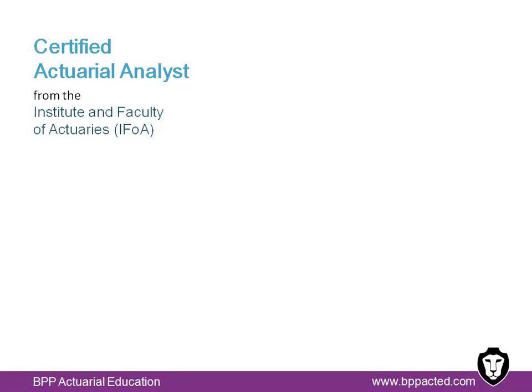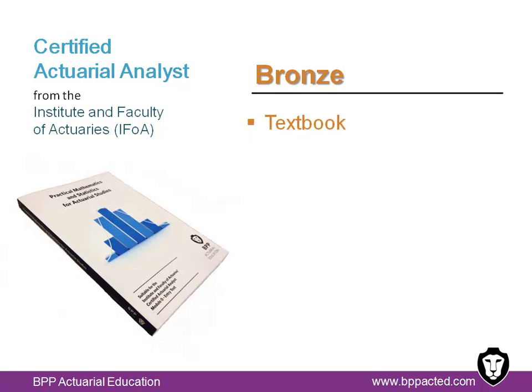We've arranged these into three tiers: bronze, silver and gold. The bronze package offers a choice of an e-book or a hardcopy textbook, containing notes, worked examples with solutions and practice questions with answers. The textbook covers all the published learning objectives for the CAA in one book, so there is no need to purchase other textbooks.